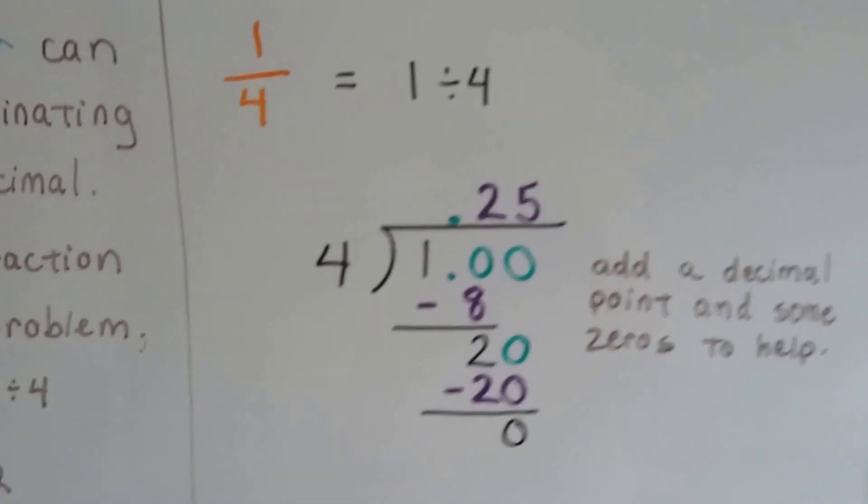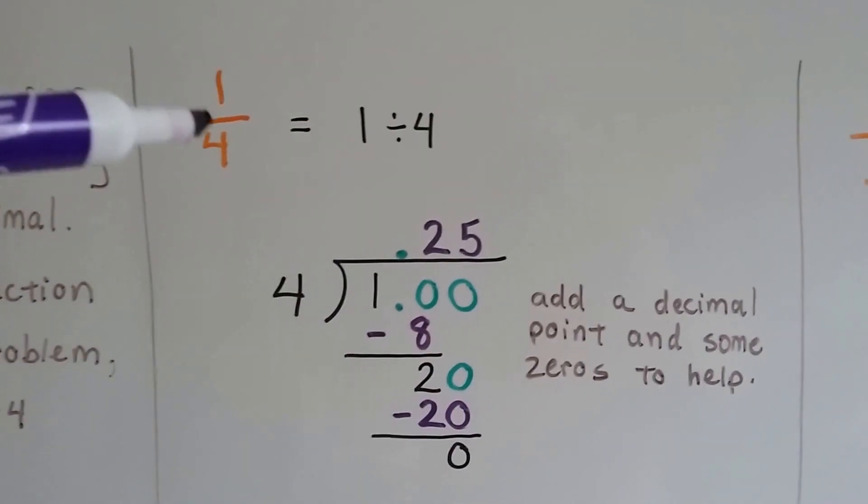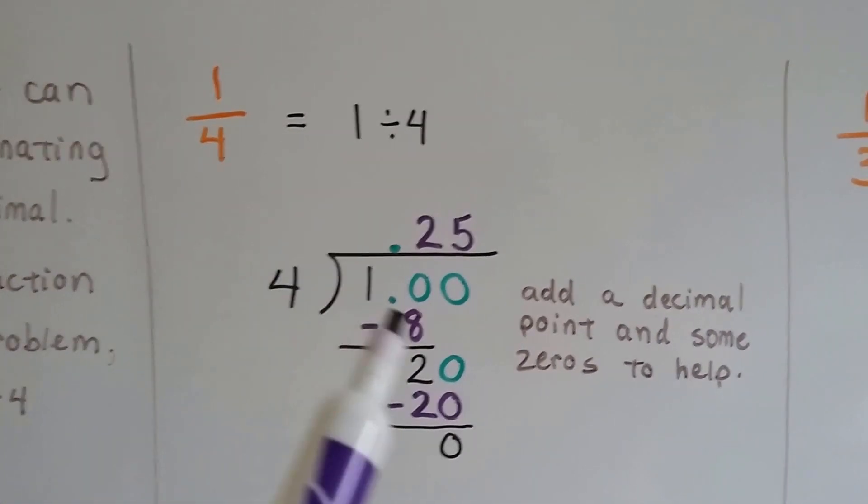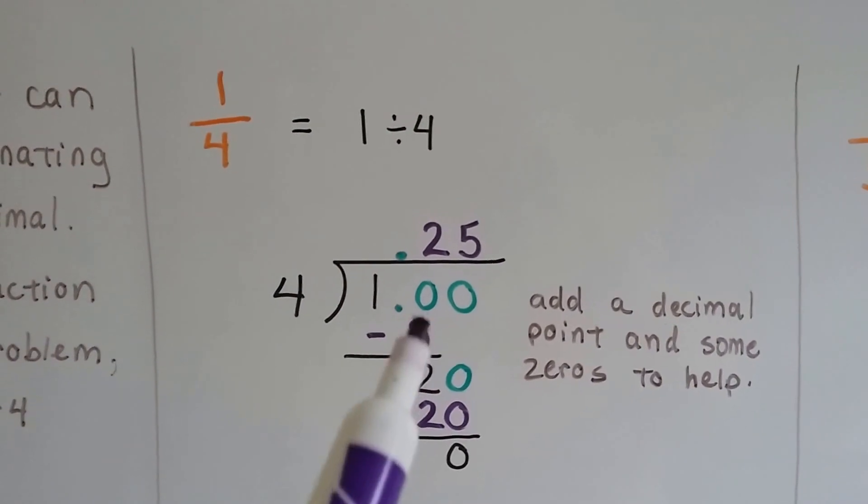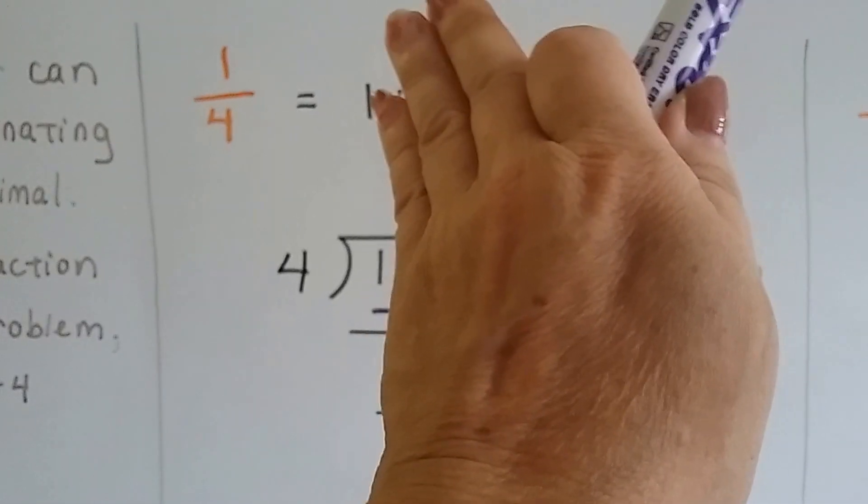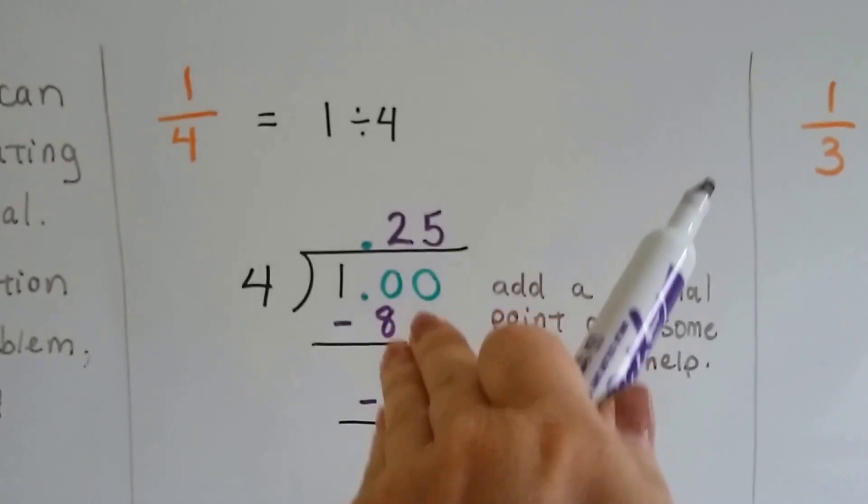So for 1/4, what we do is we say 1 divided by 4. And we have to add a decimal point and some zeros to help us because 4 can't go into 1 by itself. We add the decimal point and some zeros.